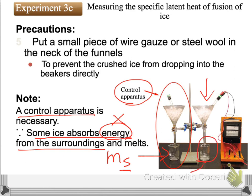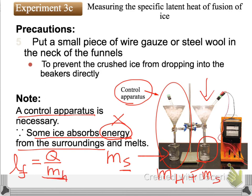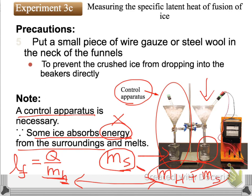For the experimental set, the beaker collects the mass of water melted from ice by the heater and by the surrounding at the same time. So if we want to find out the specific latent heat of ice, remember that Q over M — the M represents the mass of ice melted by the heater only. We have to use the mass of water collected by the experimental beaker minus the mass of water in the control set, so that we can get the mass of water really melted by the heater.